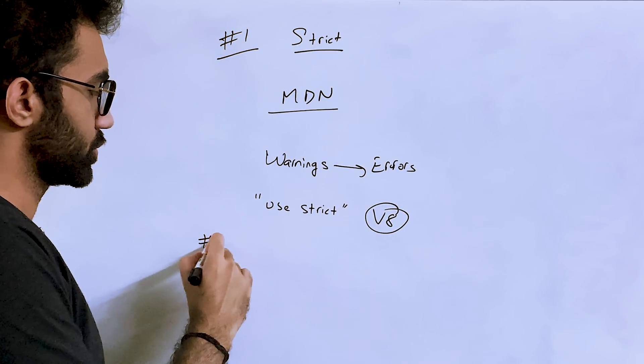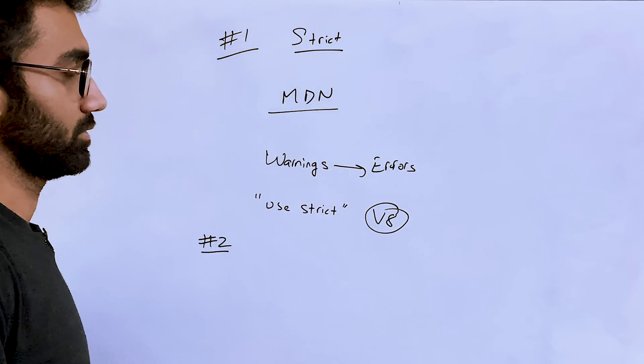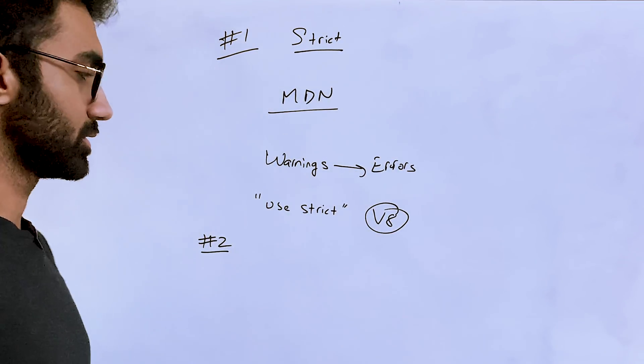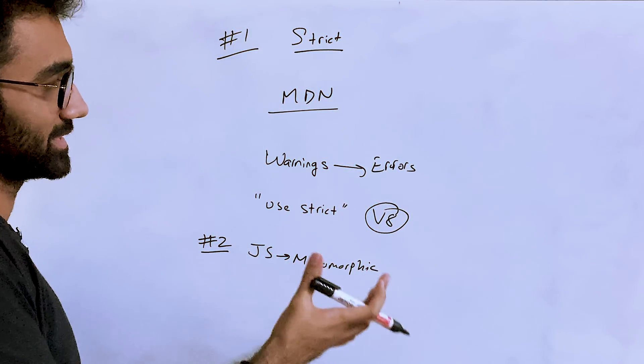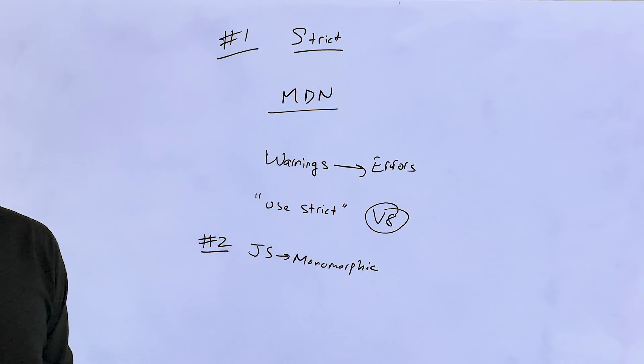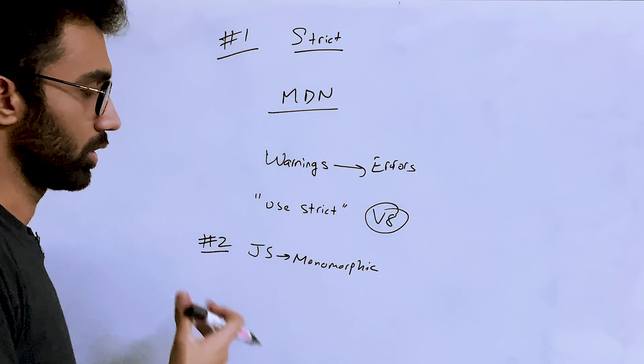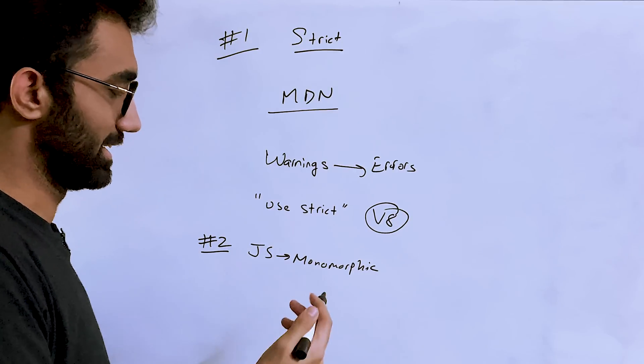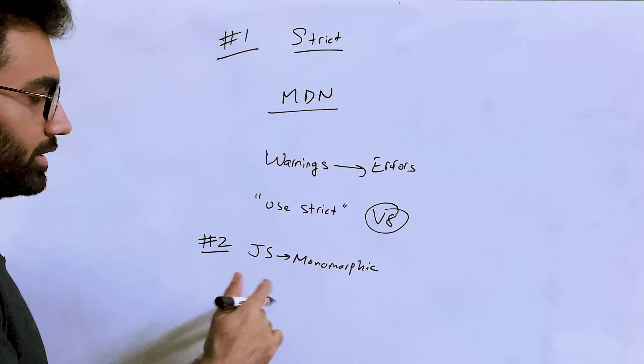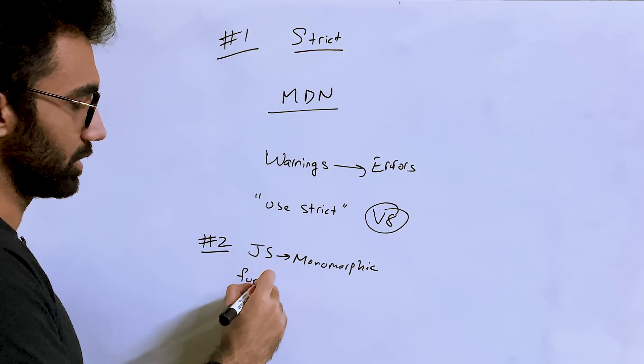The second point, which is super important even for senior JavaScript developers, is that you actually use JavaScript in a more monomorphic way. What does this term exactly mean? I know that a lot of people here would not have an idea on what monomorphic and polymorphic things are.